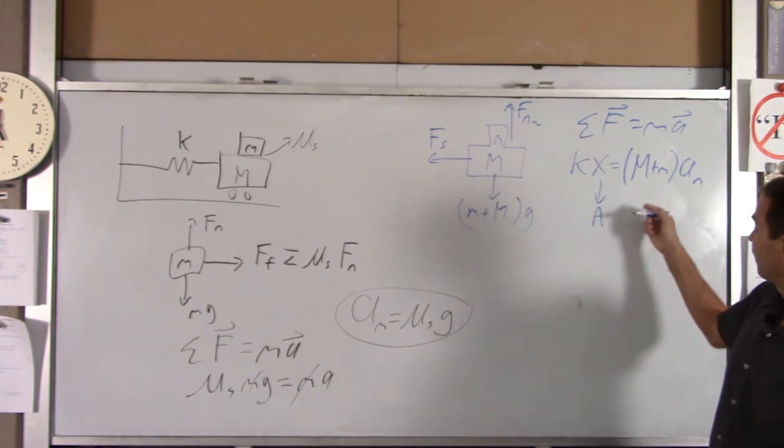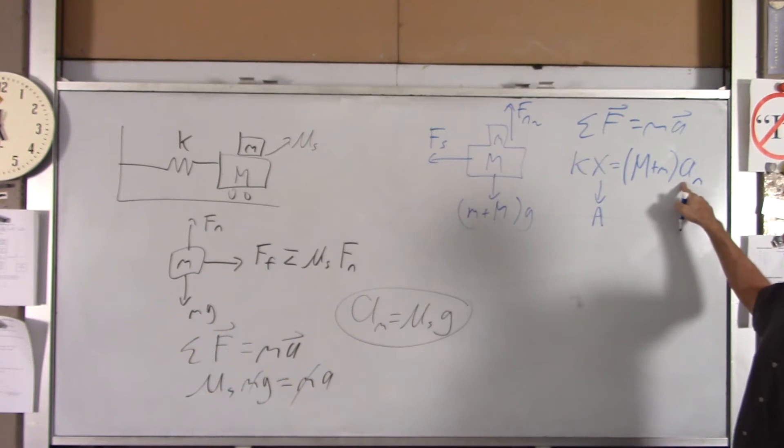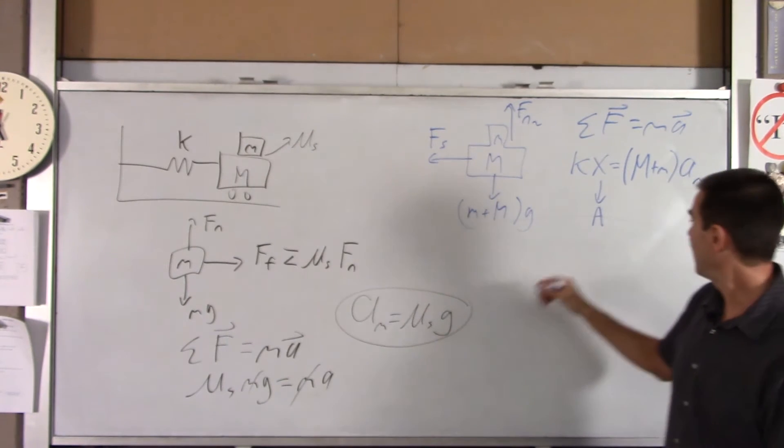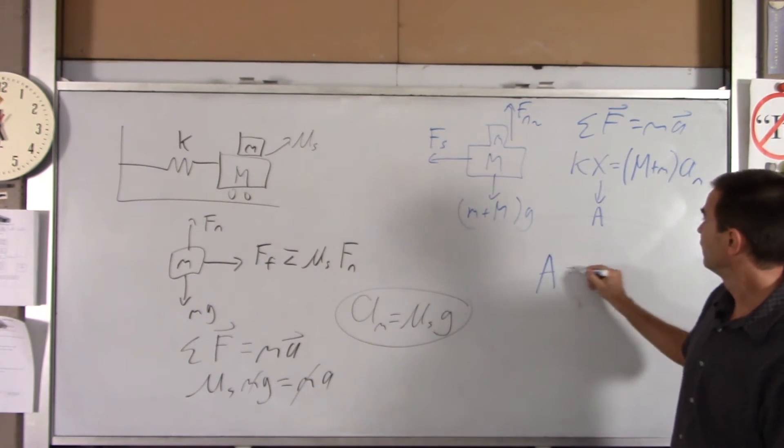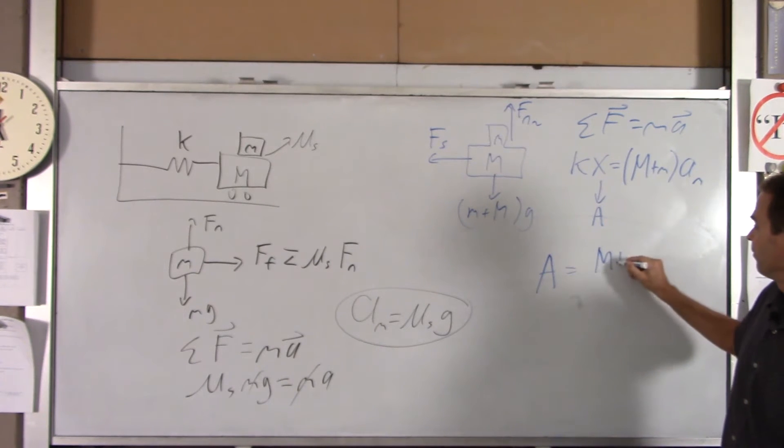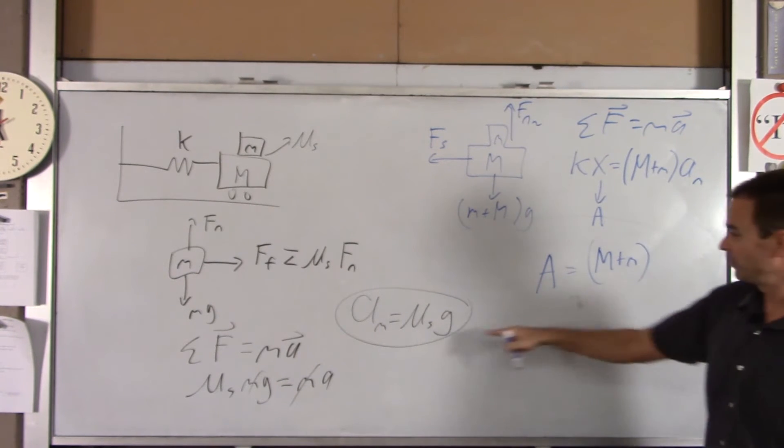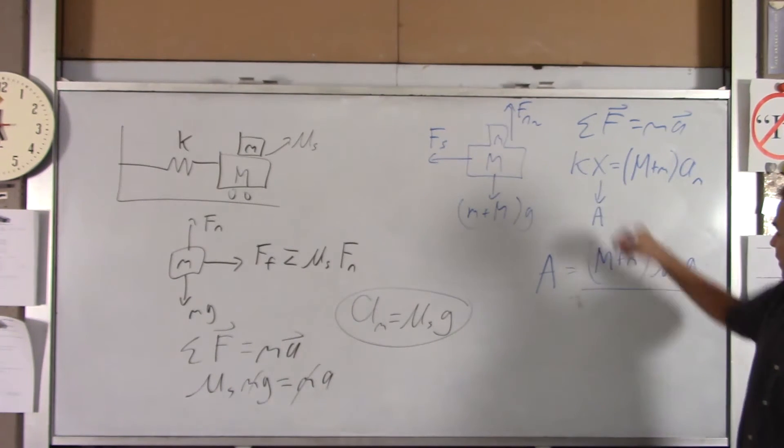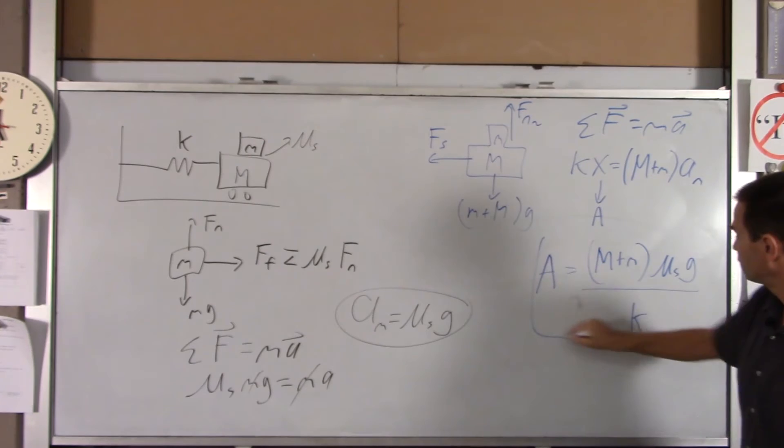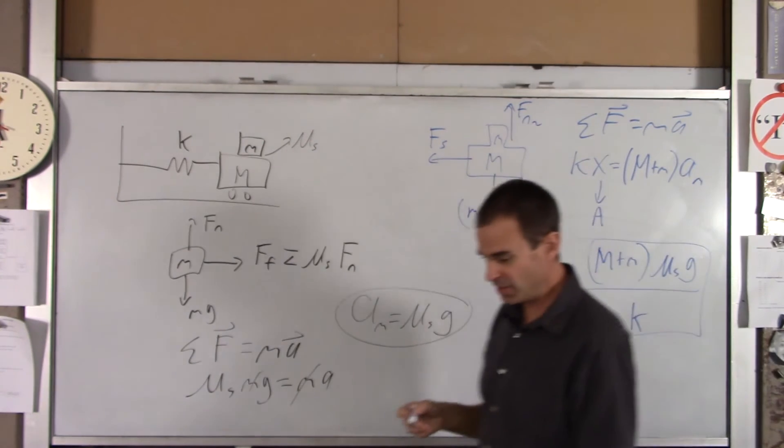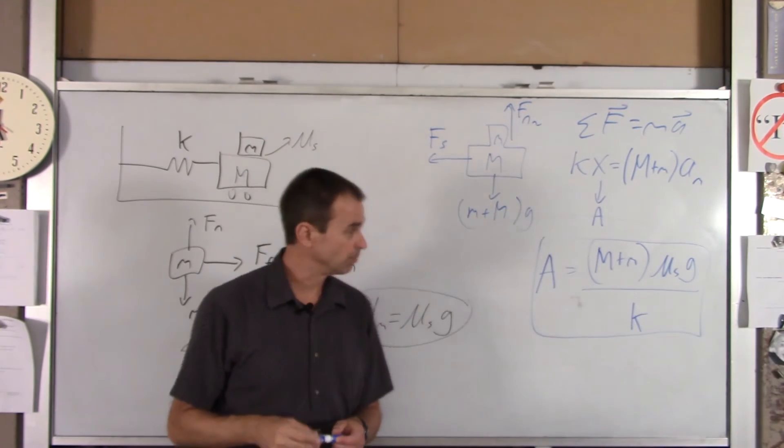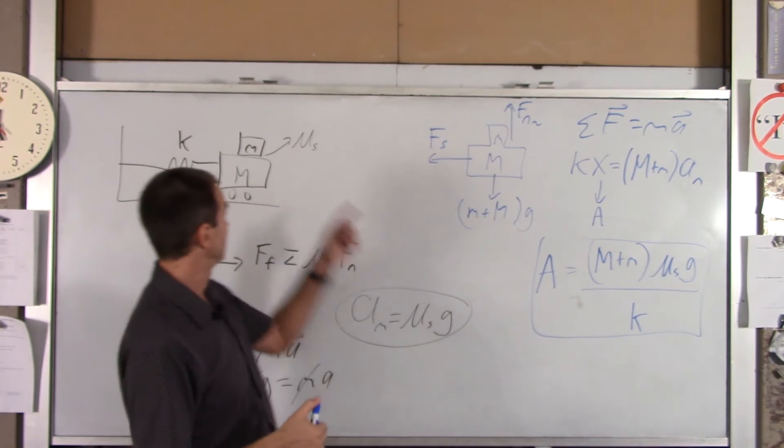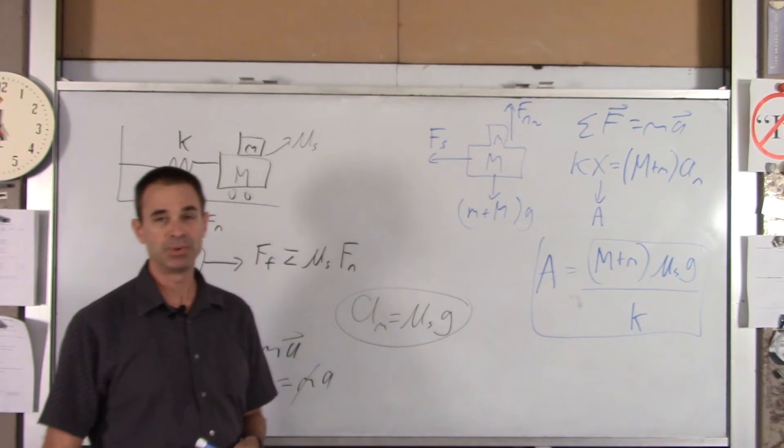So, basically, I'm just solving for a. I'm going to sub in for a max. I'm going to sub in this, and you've pretty much got your answer. It's big M plus little m times this, which is mu sub s g over k. So, that is the biggest amplitude that the motion can have and not let the little guy slip on top of the big guy.